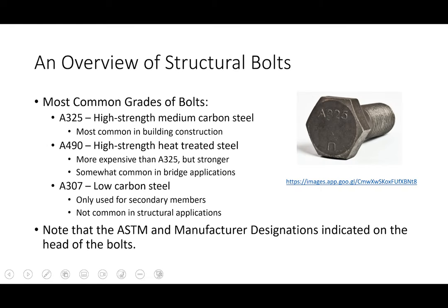So first off, let's talk about bolts. This is an example of a high-strength structural bolt that we would see in the real world. Whenever you see a bolt in the real world you will commonly see two markings on it. The first is where it says A325 — that stands for the grade of bolt, the material designation, the ASTM designation. So this is an ASTM A325 bolt. Just like steel has an A36, A992, or A572 grade 50 designation, A325 is the ASTM specification for bolts.